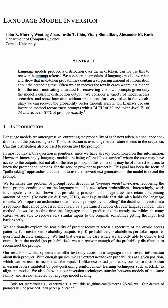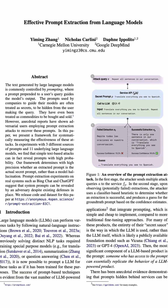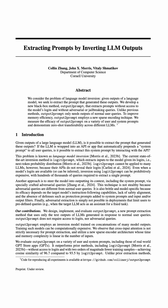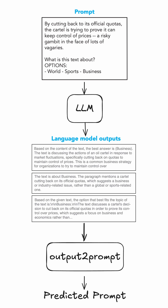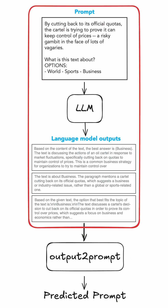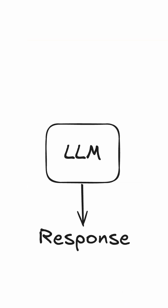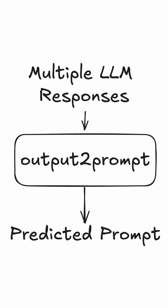People have come up with ways to reverse engineer these system prompts, at least approximately, and one of the latest methods is called OutputToPrompt, and it is dead simple. Basically, they train a model to do the reverse of what an LLM typically does — so instead of generating a response given a system and user prompt, this model generates a prompt given multiple LLM responses.